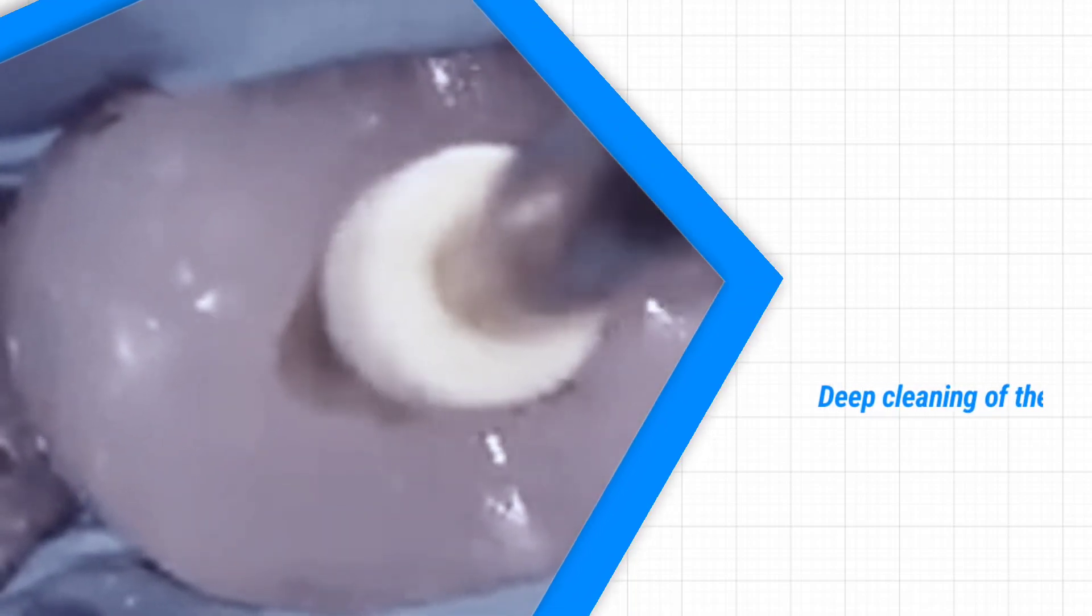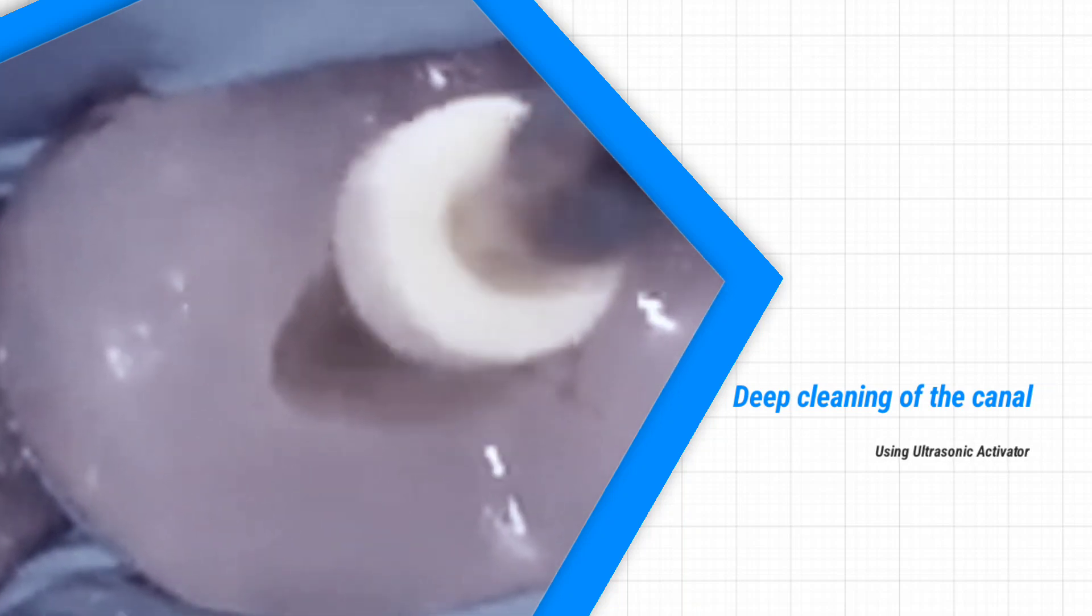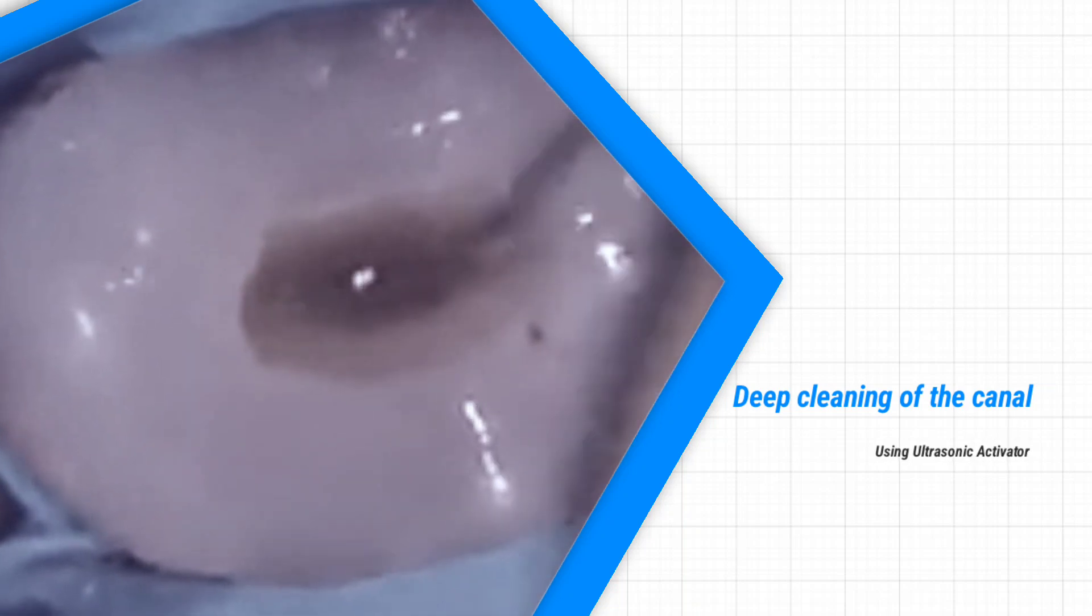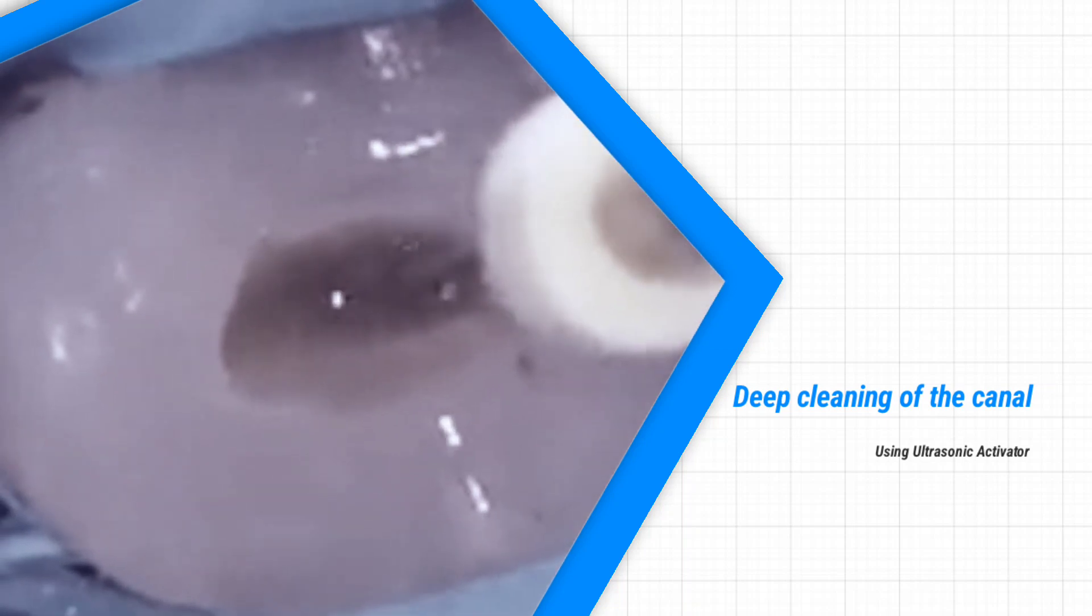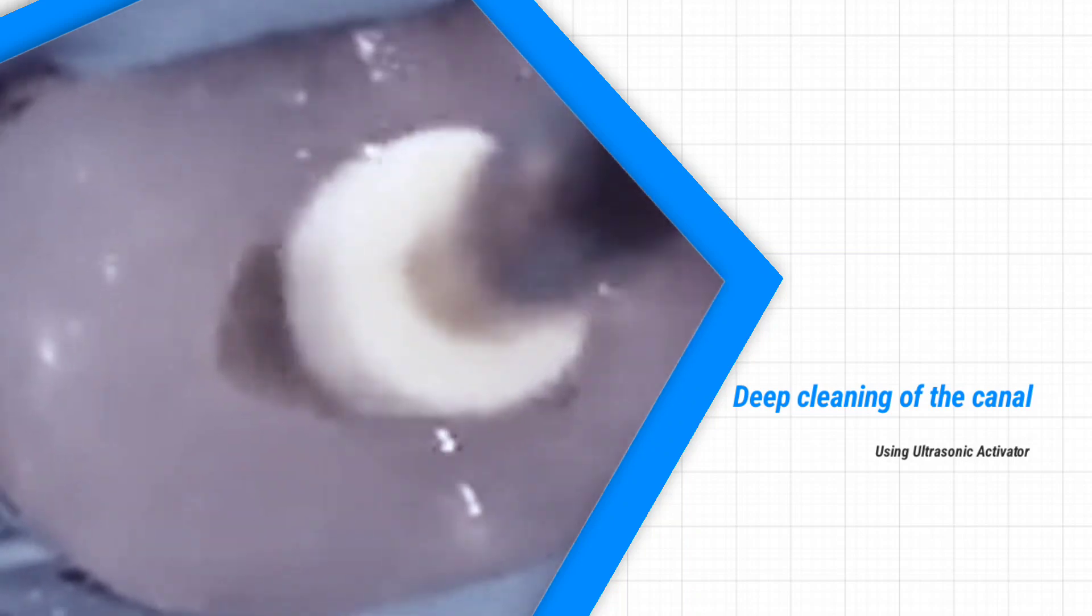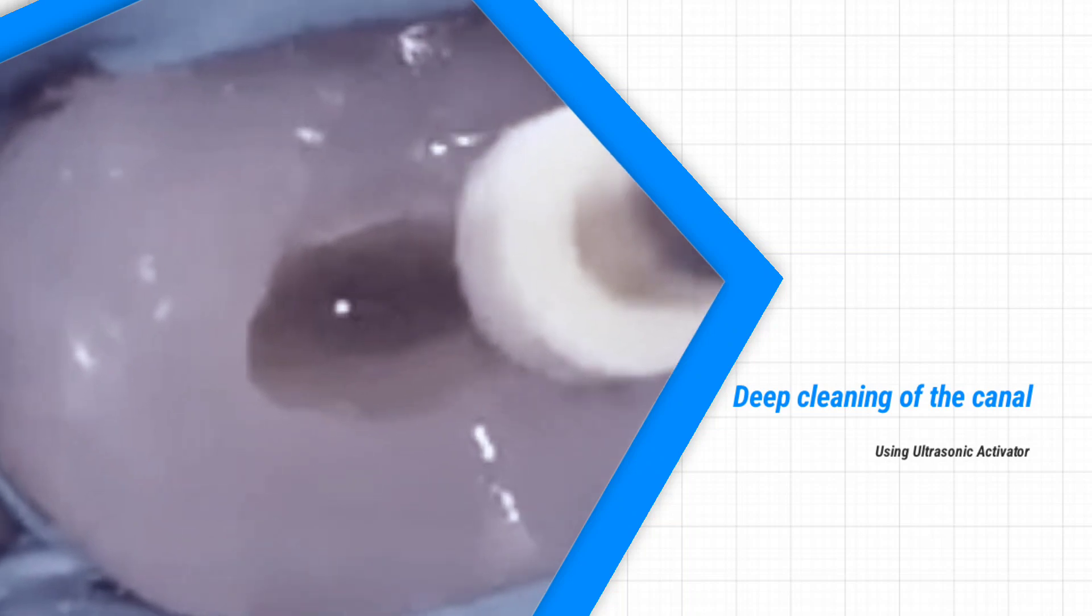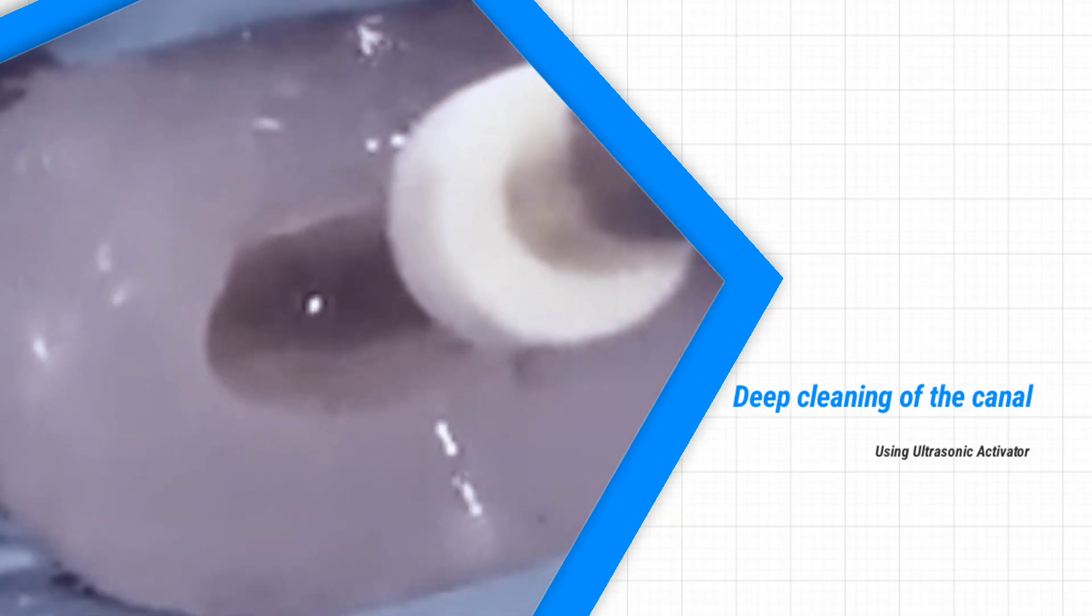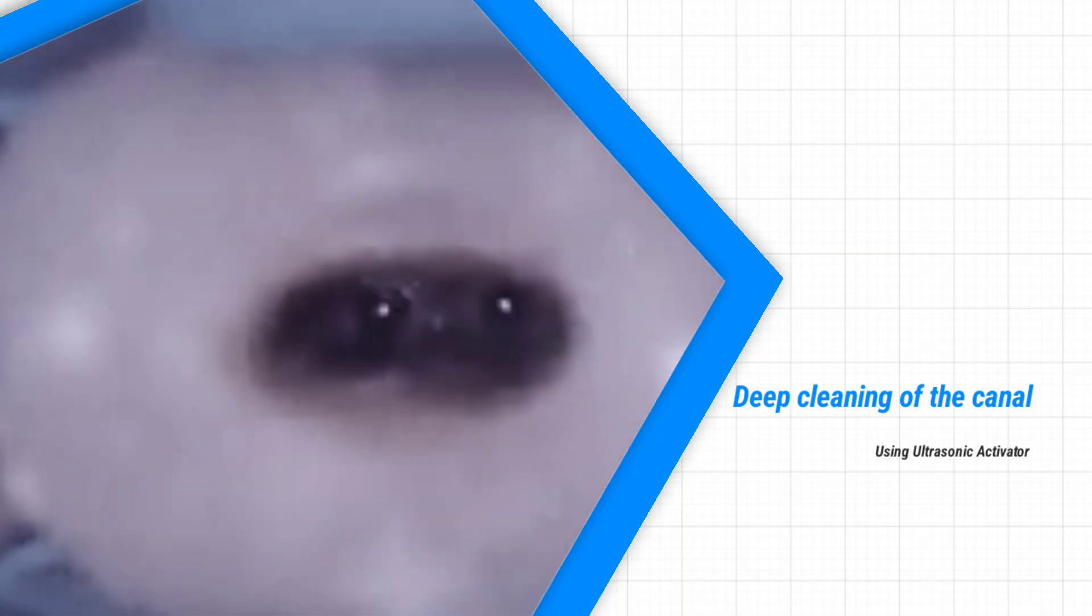Ultrasonic irrigation device removes the residues with high frequency vibrations. Under the action of acoustic streaming, the root canal is cleaned well and it facilitates 3D obturation and long-term success. It causes activation of the irrigating solution and helps in deep cleaning and disinfection into the lateral canals, fins and webs.